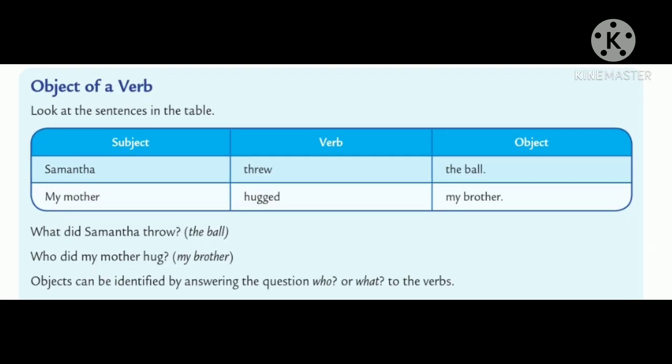Object of the verb. Look at the sentences in the table. Samantha threw the ball. Second, my mother hugged my brother. In the first sentence, Samantha is the subject, threw is the verb, and the ball is the object. In the second sentence, my mother is the subject, hugged is the verb, and my brother is the object.